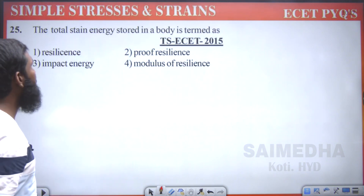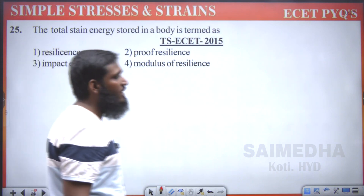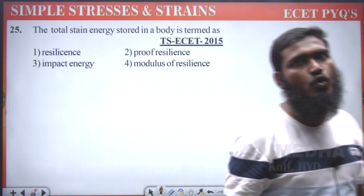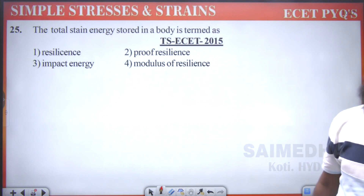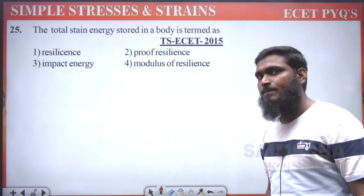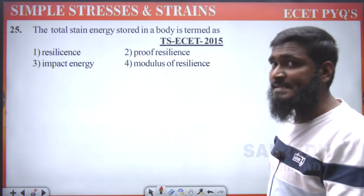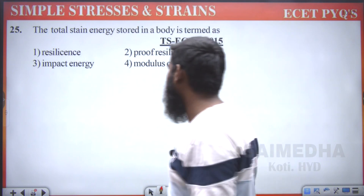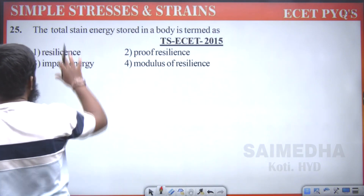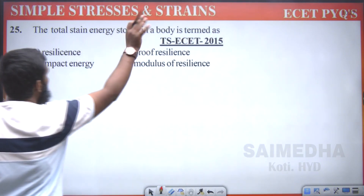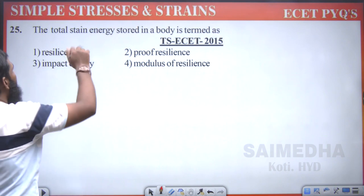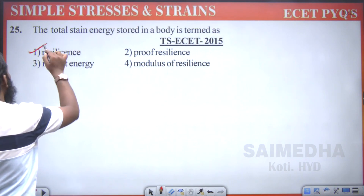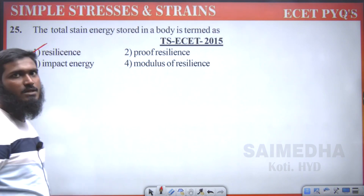The total strain energy stored in a body — just now we discussed: whenever we have energy stored in the body, we call it resilience. If you have maximum, then we call it proof resilience. Here, maximum is not given, so directly we go with resilience. Resilience — the first option is correct.